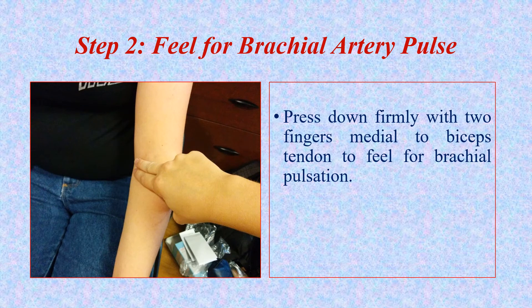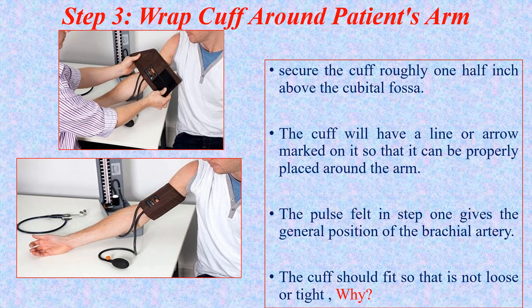When you perform the auscultatory method, you need to know where to place the stethoscope. With the forearm flexed, locate the biceps tendon, and next to it feel for the pulsation of the brachial artery to know its location before placing the stethoscope. Wrap the cuff around the upper arm as described. The cuff should fit the upper arm properly — not too tight and not too loose. If too loose, it will give a lower reading; if too tight, it will give a higher blood pressure reading.